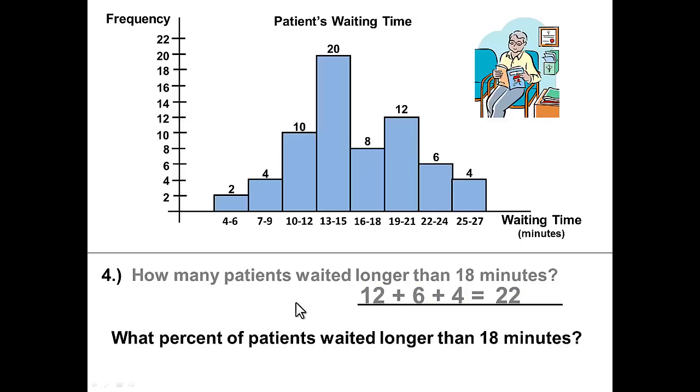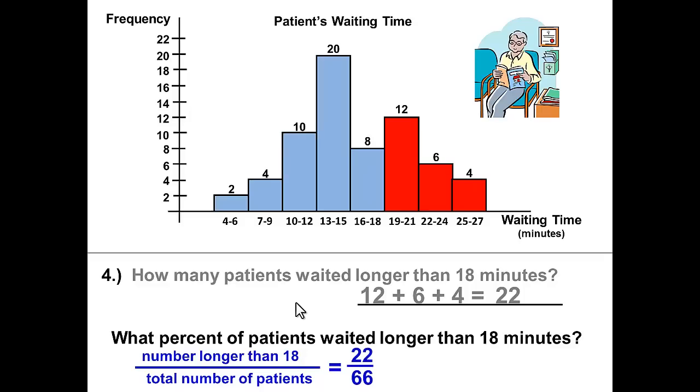And part B of this, what percent of patients waited longer than 18 minutes? Since it's the same group, the number would be 22. But we would compare that 22 to the total number of patients, which would be 66. 22 divided by 66 gives us .333, again rounding to three decimal places so that when I move my decimal over two places, I'm accurate to one decimal place, 33.3%.